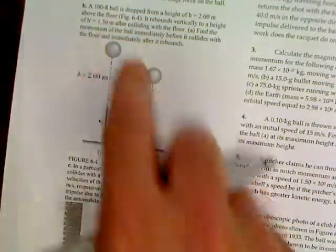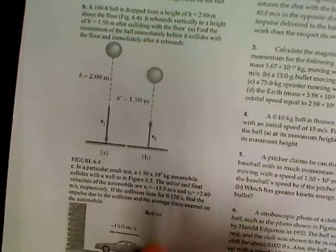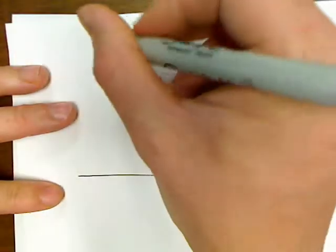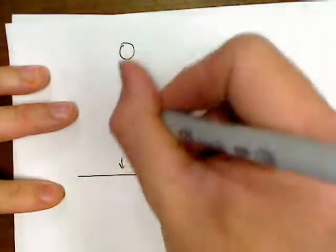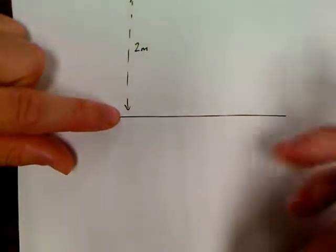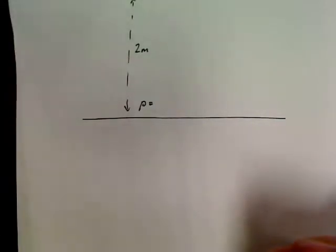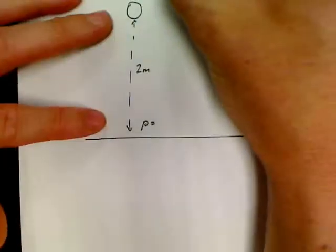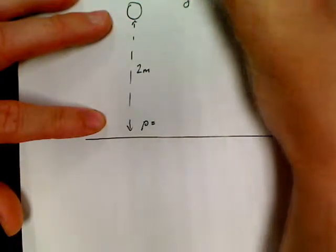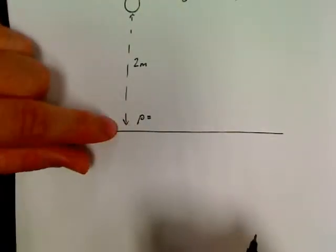Next problem: someone has dropped a 100-gram ball onto the floor. It tells us somebody has a ball at a height of 2 meters. And what it wants to know is what is the momentum of the ball right when it strikes the ground? It told us that the ball is 100 grams, which would be 0.1 kilograms. If I want to know this momentum, I just need to know its velocity.